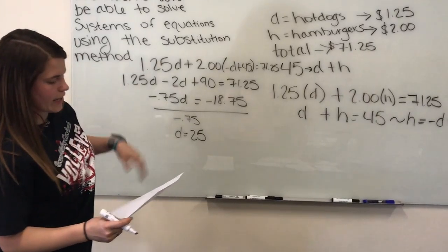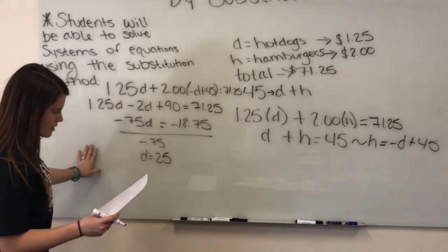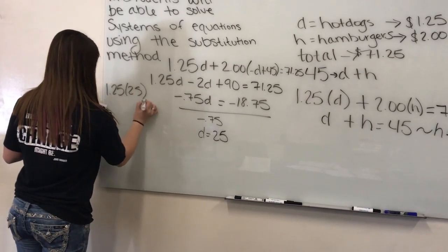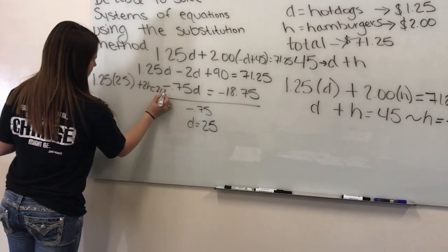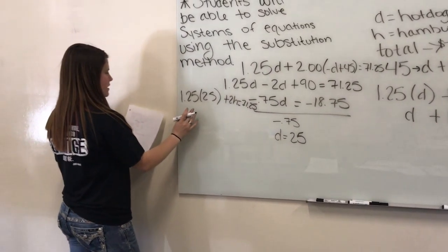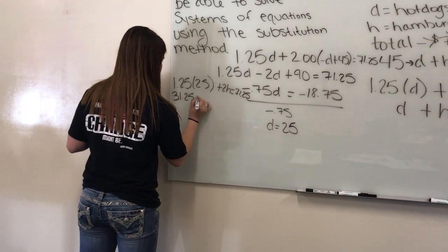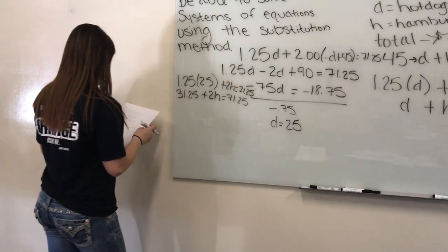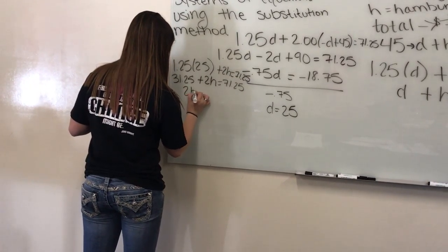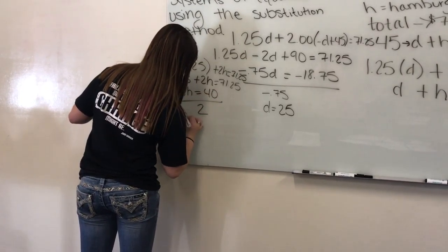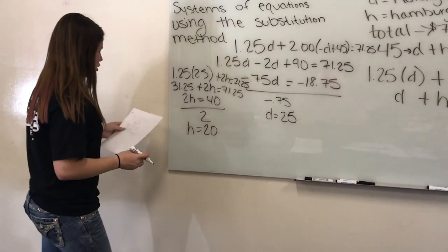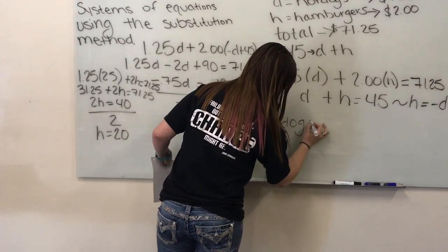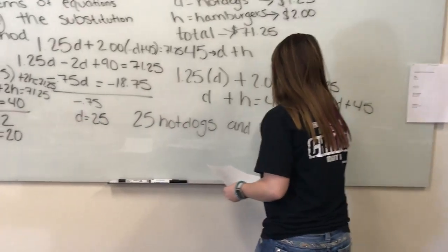Using the first equation to solve for hamburgers: 1.25 times 25 plus 2h equals 71.25. That gives 31.25 plus 2h equals 71.25. Subtract 31.25 to get 2h equals 40, then divide by 2 to find you had 20 hamburgers. So in total, you had 25 hot dogs and 20 hamburgers.